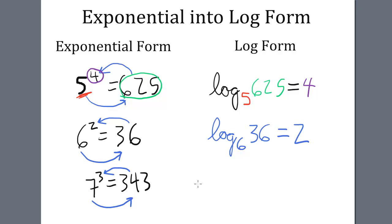So, written as a log, we write log base 7. Next, 343 equals cyclone ends at the 3.